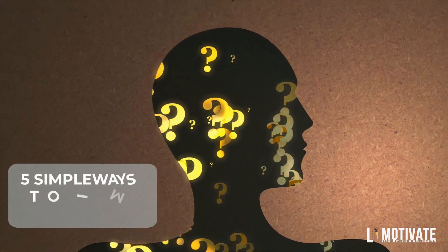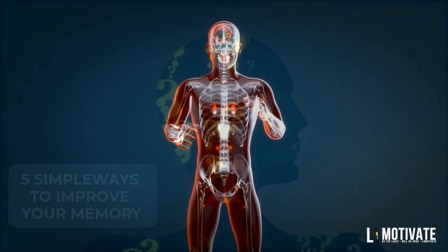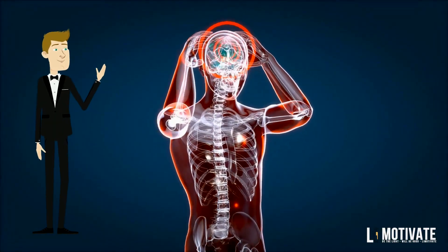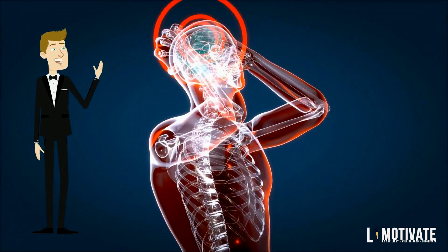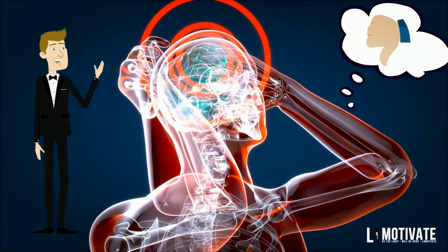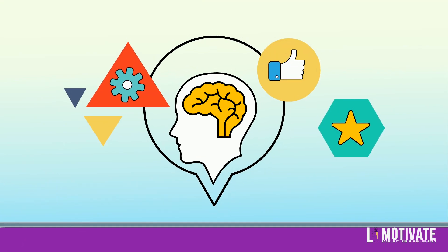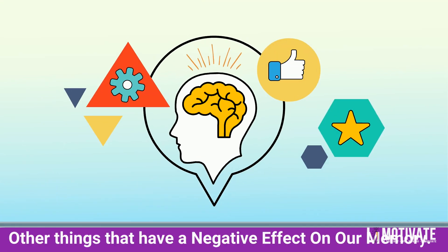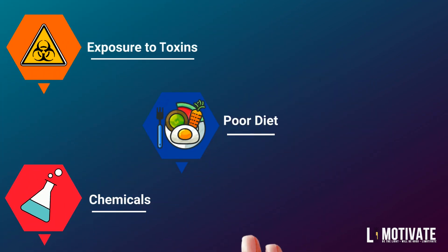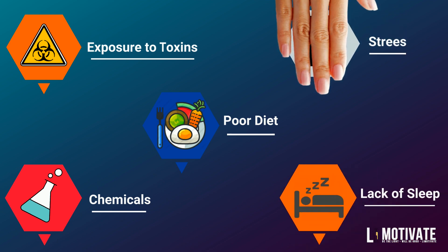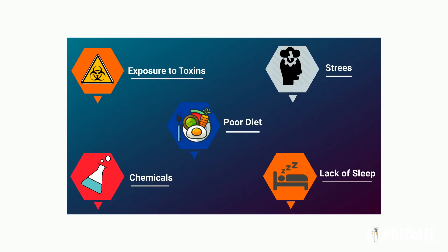Five simple ways to improve your memory. Most of us believe that our brain activity slows down with age and that memory loss is a logical consequence, but many researchers have shown that there are other things that have a negative effect on our memory, starting from exposure to toxins, chemicals, poor diet, lack of sleep, stress, etc.